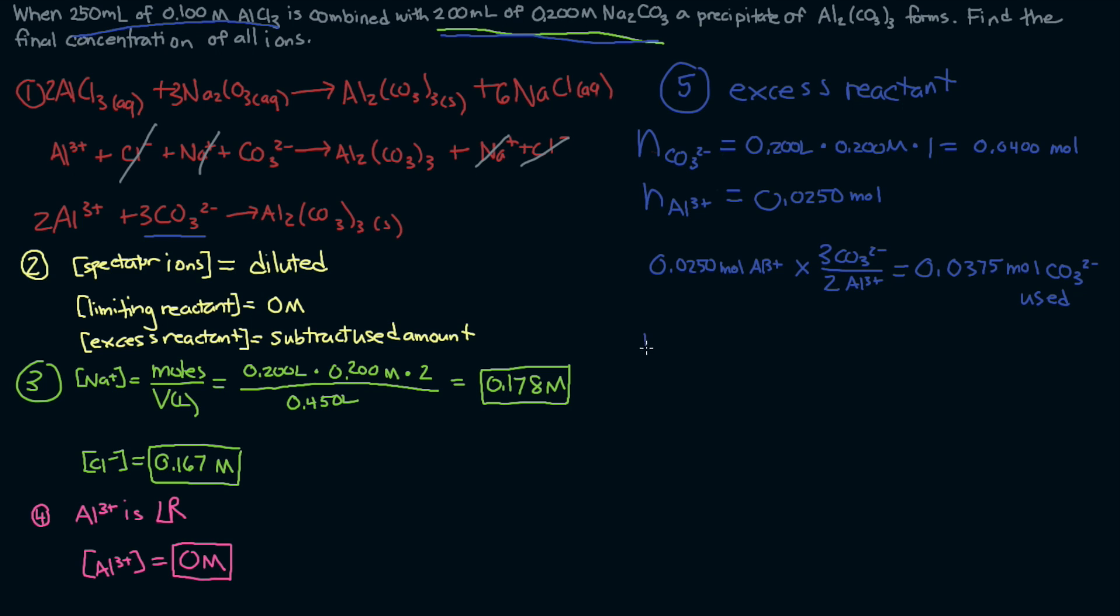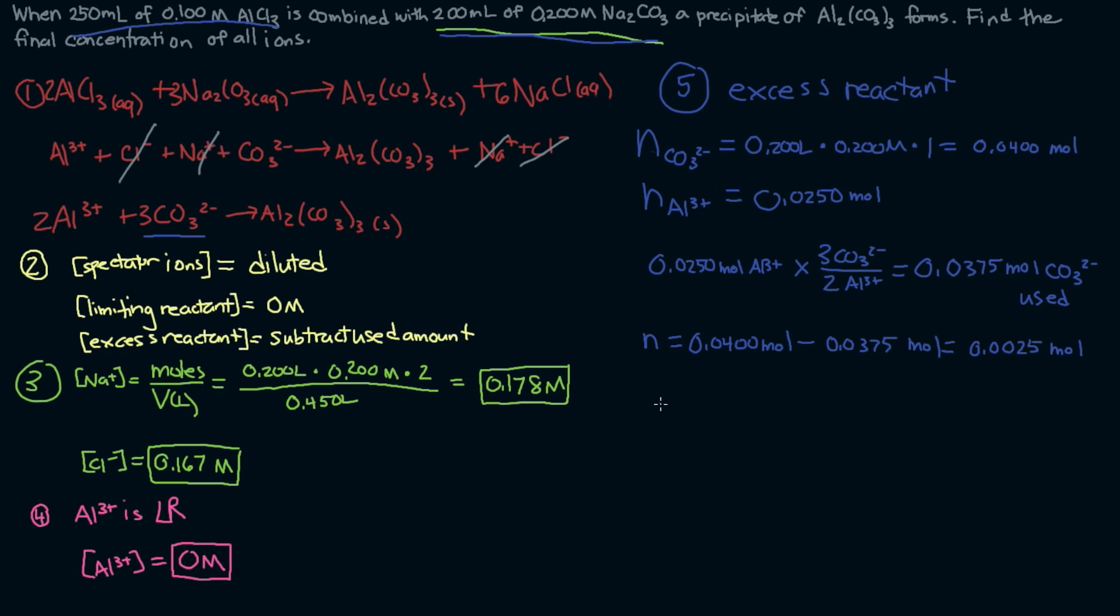Our final number of moles of carbonate will be 0.0400 moles, the initial amount, minus 0.0375 moles, the amount that was used, to get 0.0025 moles remaining.